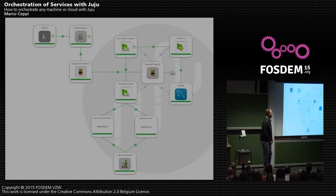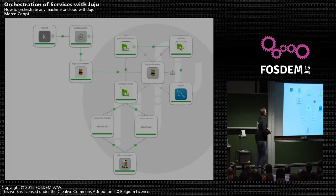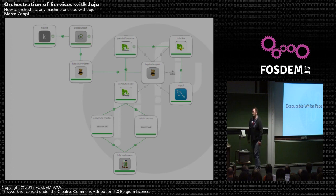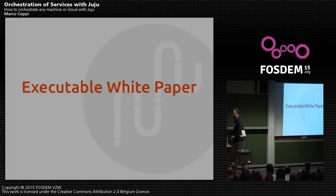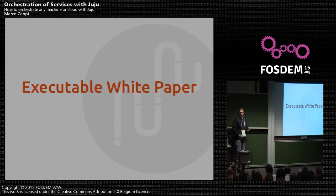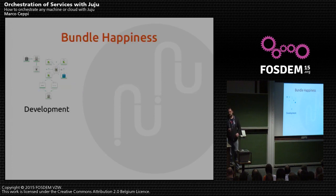This is a big data stack. This is working with Hortonworks Hadoop, and it's hooked into a logging system front-ended by Elasticsearch and Kibana. These are all available, and we like to call them 'executable white paper,' because we're encapsulating the best of the community's knowledge distilled into these charms. We distribute them through a charm store, and that undergoes peer review. And what's beautiful about that is bundle happiness.